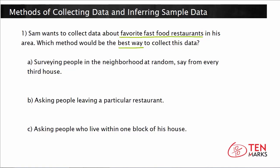This makes the data unbiased and reliable and representative of the entire population. In some cases, people might collect sample data from a limited source, which can be biased or representative of only part of the population and not the entire population.